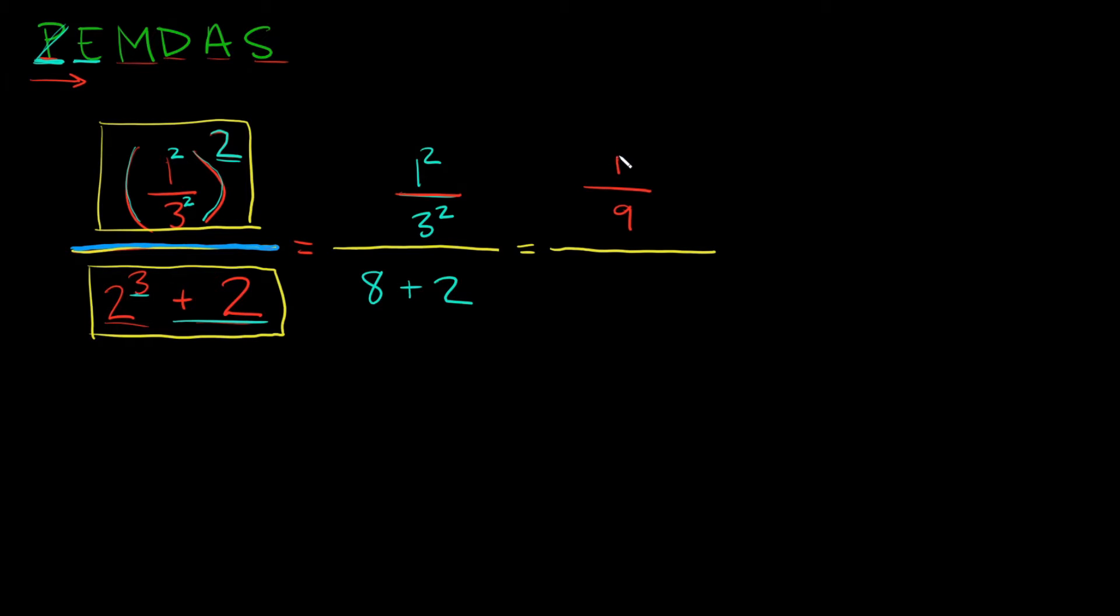So now here we just have one over nine. Now let's go back to the bottom. Here we have eight plus two. Can we simplify that? Yes we can. What's eight plus two? Ten.